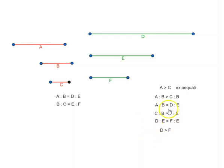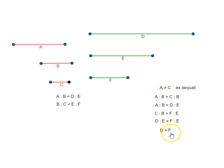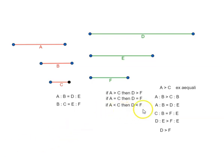So what have we achieved? We have seen that if A is greater than C, then D is greater than F. Similarly, we can prove that if A is equal to C, then D is equal to F, and if A is less than C, then D is less than F. Which means this proposition is proved.